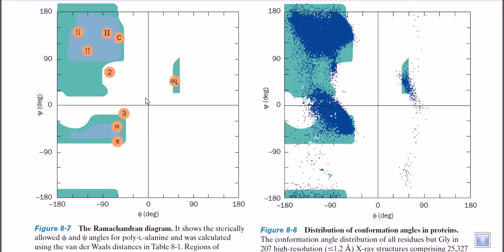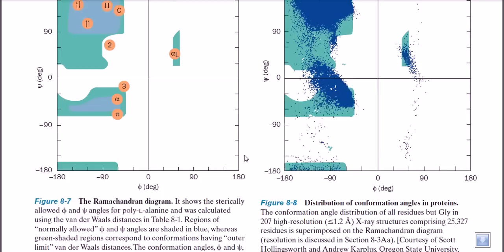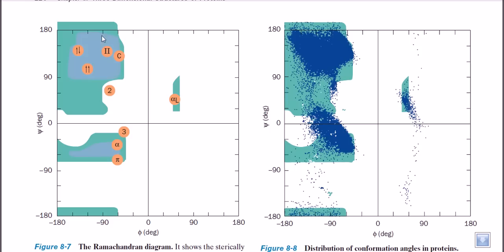Looking at this Ramachandran plot, a particular region in the upper quadrant is really favorable for alpha helical bonding. Another part is favorable for beta sheets. This diagrammatic presentation tells us about the making of beta sheets, which are most often parallel or anti-parallel in nature. The conformation having psi angles of positive 90 to positive 180 degrees and phi angles of minus 90 to minus 180 degrees will favor beta sheet production rather than alpha helices.